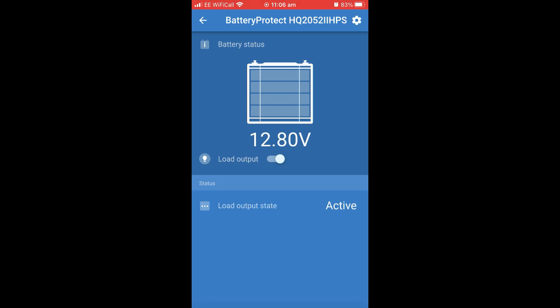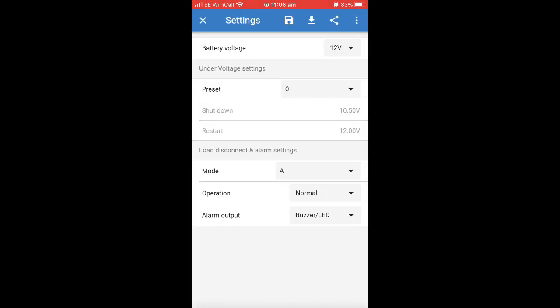Once open you'll see that the battery status is displayed along with the voltage and your load output state. We can now go into our settings where we'll be able to see the battery voltage. If you were using a 24 volt system you would be able to change this manually and you have your under voltage settings.